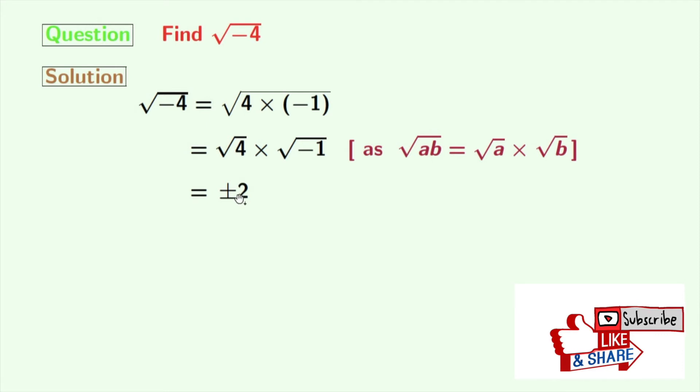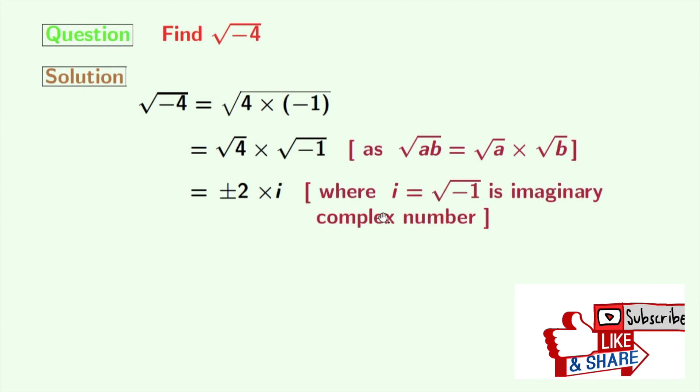Square root of 4 is equal to plus minus 2 and square root of minus 1 is i. Where i is an imaginary complex number and its value is square root of minus 1.